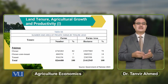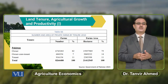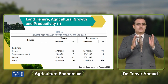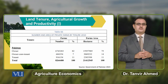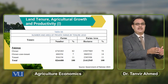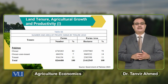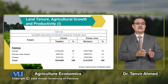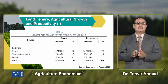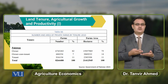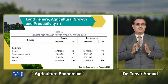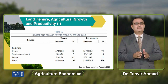When we talk about land ownership and land distribution, land is distributed among owners, owner-cum-tenants, and tenants. The total number of farms that are owner-operated is 82%, and 7% are owner-cum-tenant farms. Approximately 11% of farms are operated by tenants. In terms of farm area, approximately 75% is operated by owners, 14% by owner-cum-tenants, and approximately 11% by tenant farmers.